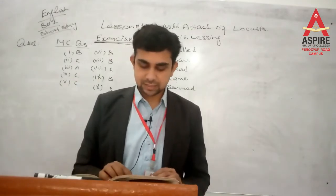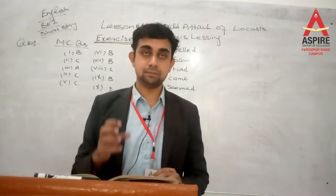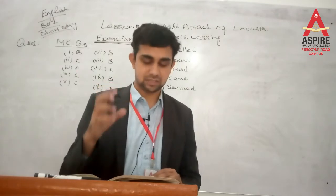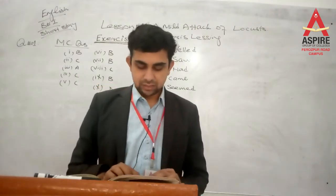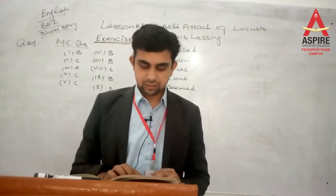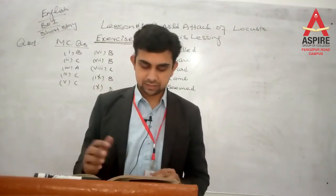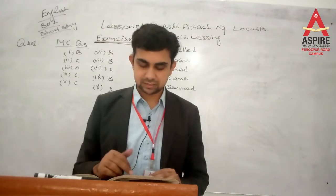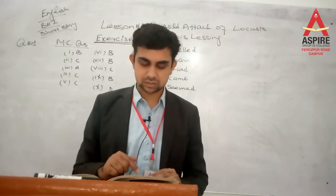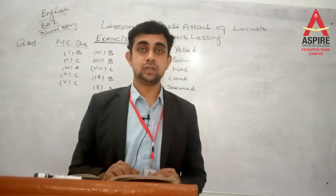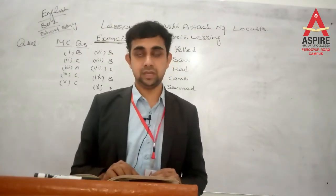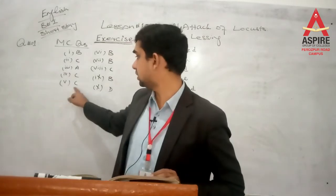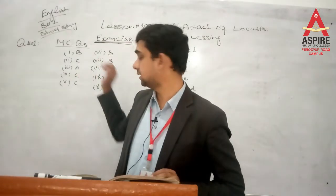Number 5: How did the locust attack the crops? Option A is one by one, B is in groups, and C is in swarms — لشکر کی صورت میں. So number 5's correct answer is option C: in swarms.